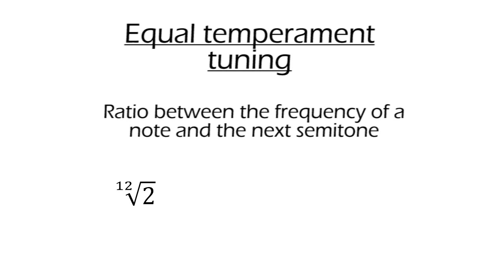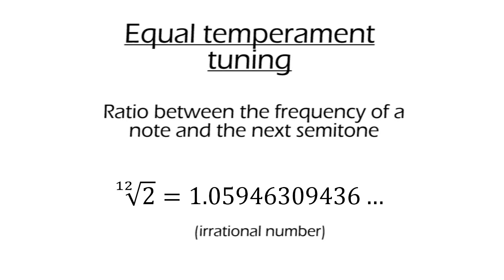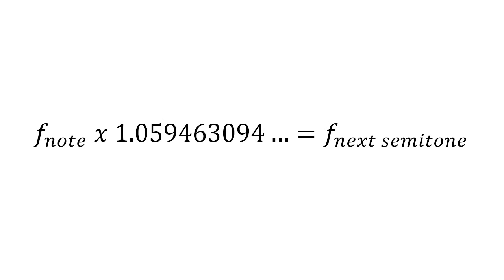In the tuning system called equal temperament, which is the one commonly used in western music, the ratio between the frequency of a note and the next semitone is the 12th root of 2, which equals this number. In a few moments you will see it is not such a weird number as it seems. This means that if you have the frequency of a musical note, and you multiply it by this number, you find the frequency of the next semitone.